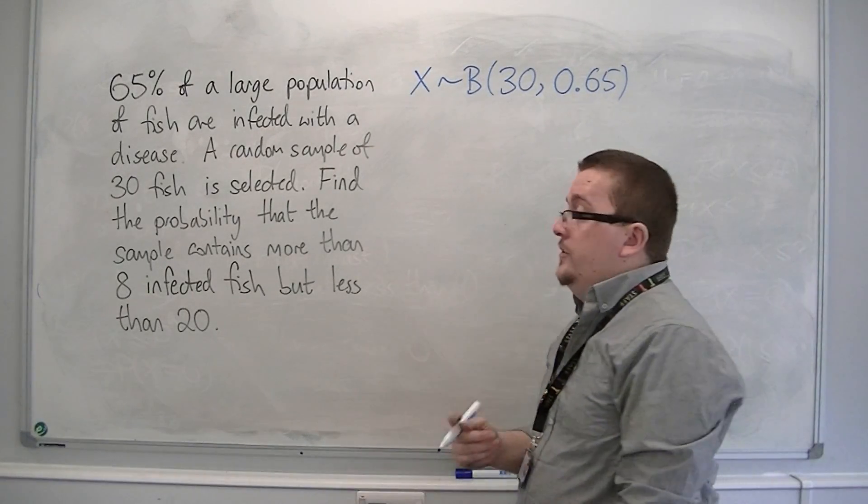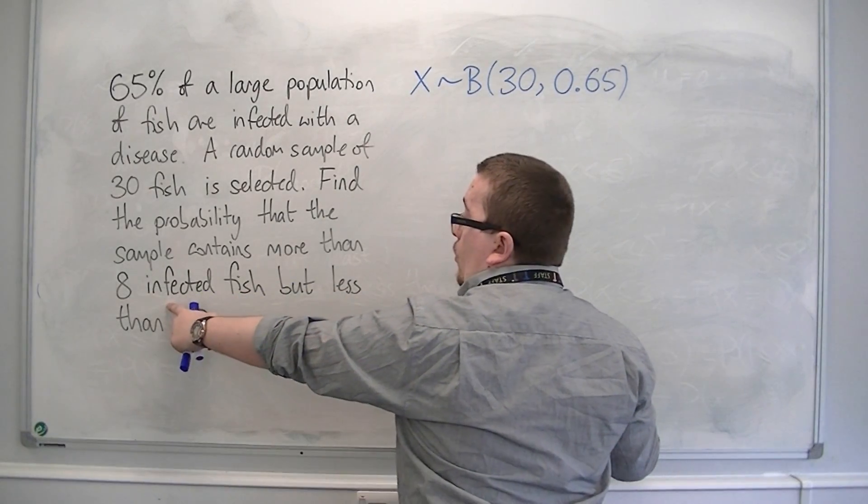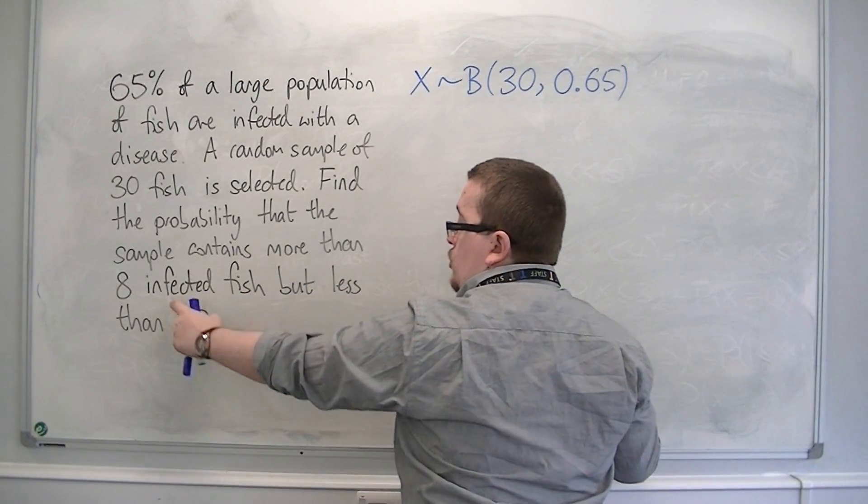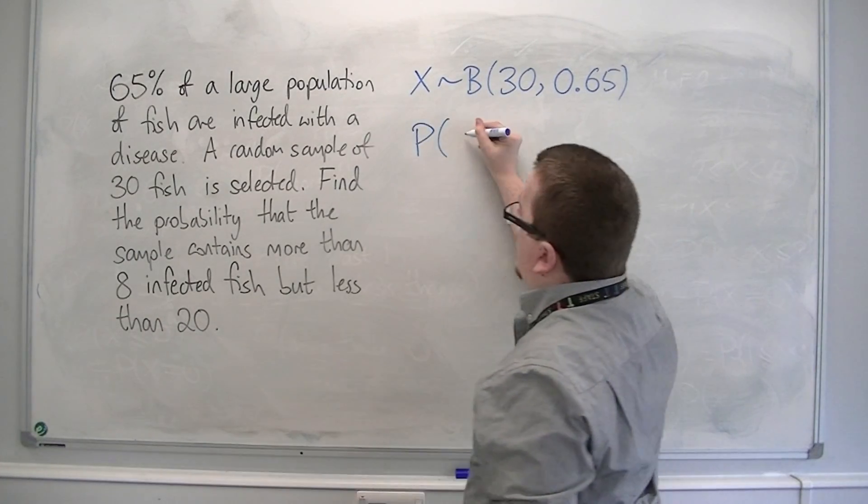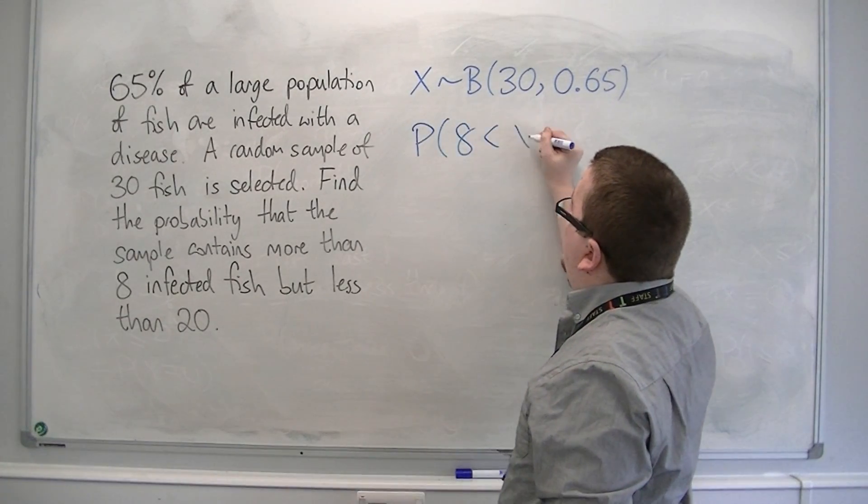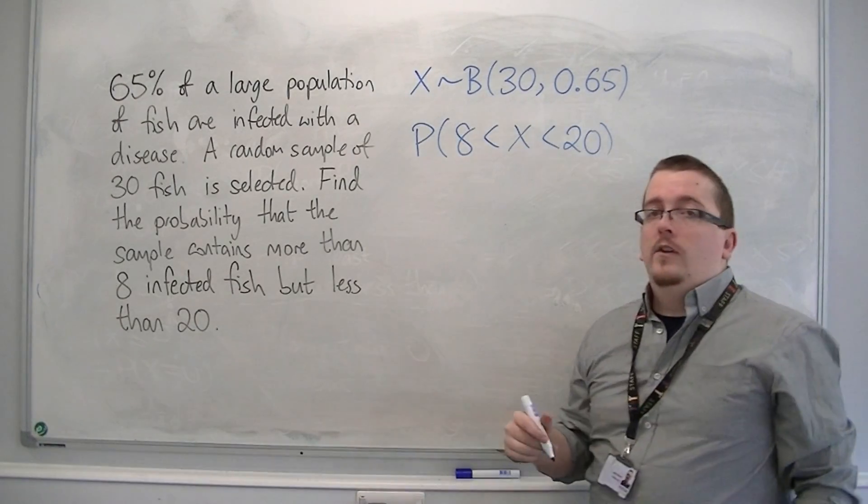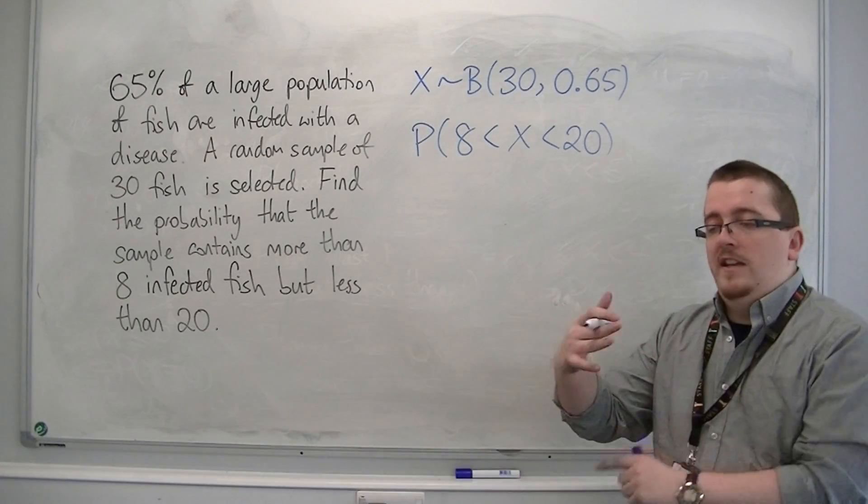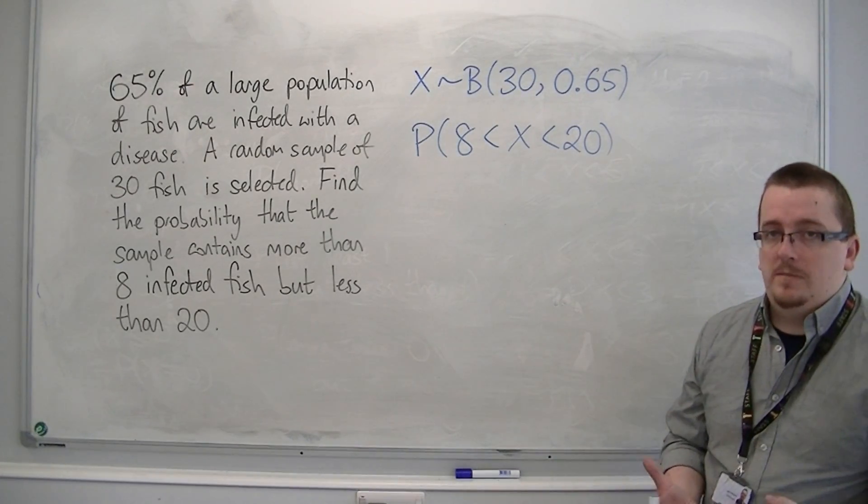We want to know the probability that a sample contains more than 8 infected fish, but less than 20. So we want the probability of X being greater than 8, but less than 20. So this is not one that we would calculate every individual probability. You could, but it's going to take you a long time.